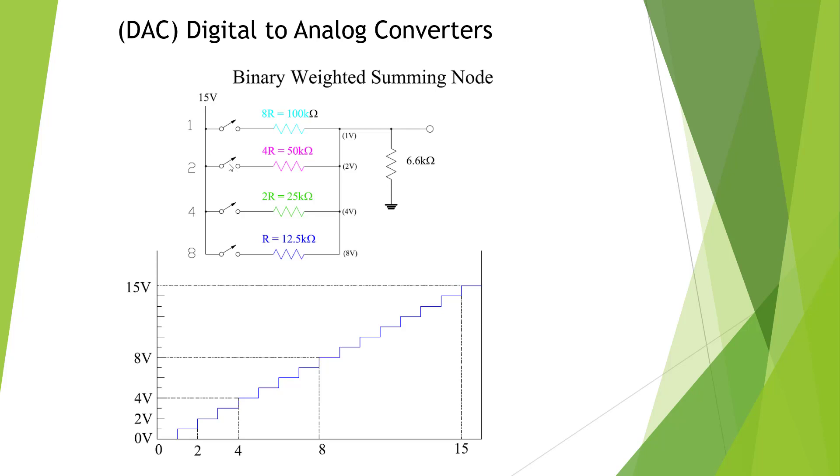Here we put in binary related values. This first switch would be the 1, the 2, the 4, and the 8. So we could put in binary numbers represented by these switches. So if I want, let's say 9, I'm going to close this switch and this switch and it'll be 9.